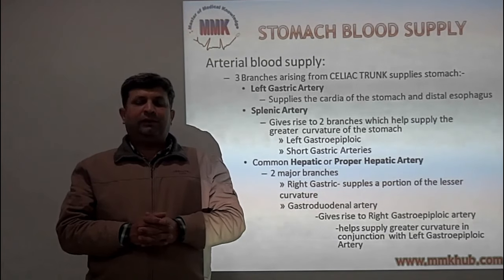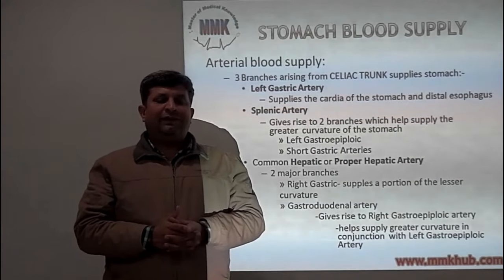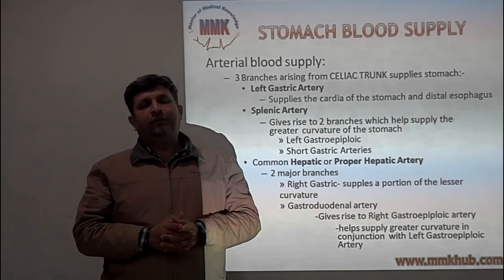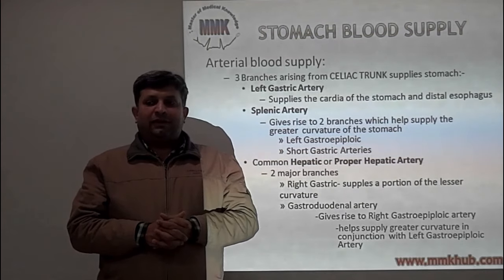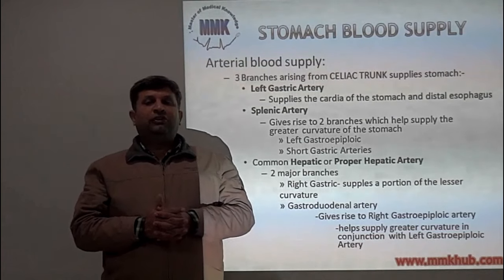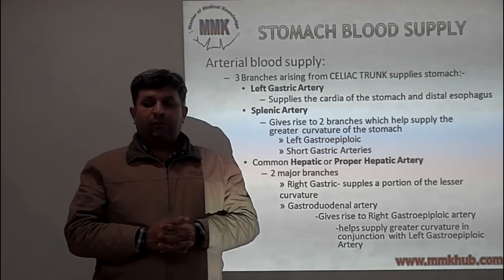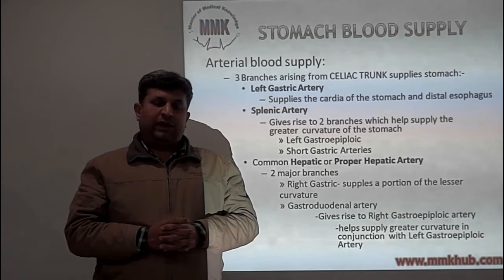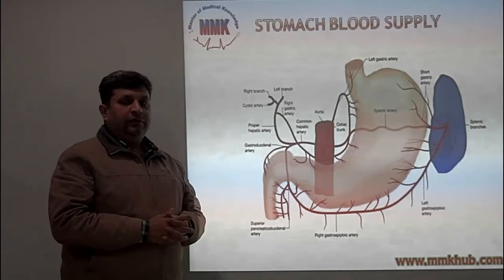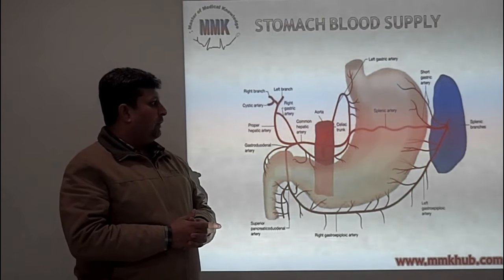Second is the splenic artery, which arises from the celiac trunk and gives rise to two branches supplying the greater curvature: the left gastro-omental artery and multiple short gastric arteries given off before it enters the splenic hilum. Third is the common hepatic artery, which gives off the right gastric artery supplying the lesser curvature, and the gastroduodenal artery, which gives rise to the right gastro-omental artery supplying the greater curvature, anastomosing with the left gastro-omental artery from the splenic artery. This diagram summarizes the arterial supply of the stomach.